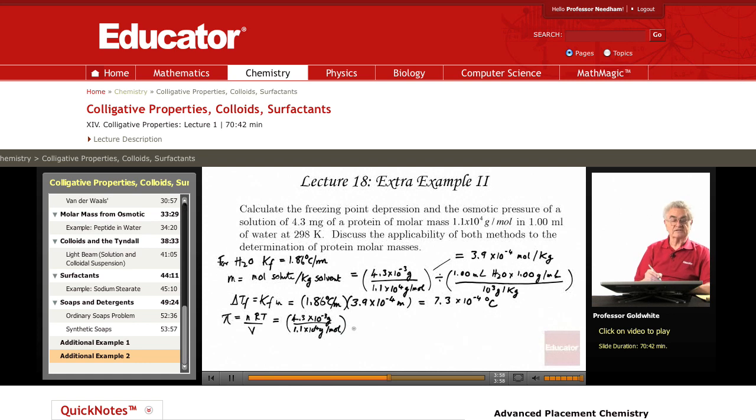R is the familiar gas constant, 0.0821 liter atmospheres per mole Kelvin times the temperature, which is 298 K, divided by the volume. That's 1.00 milliliters. And to convert that to liters, we will multiply by 10 cubed milliliters per liter.